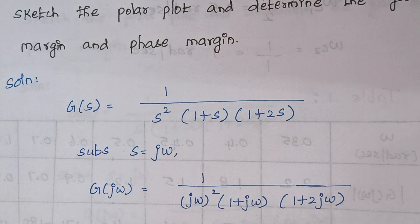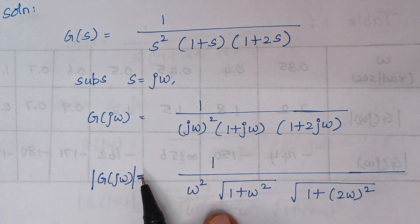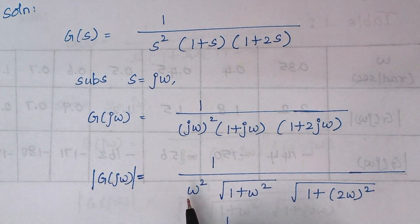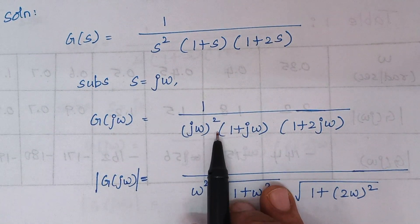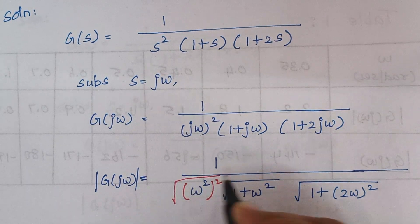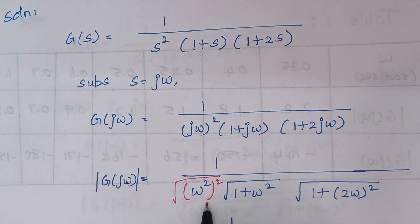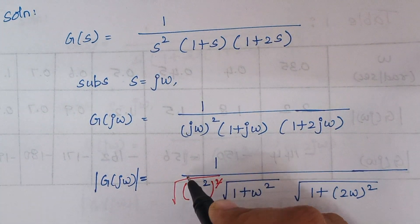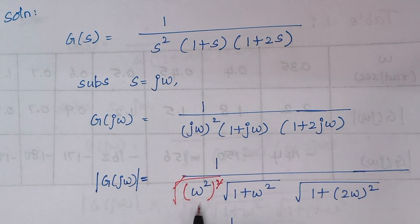Next we are going to find an expression for magnitude and another expression for phase angle. We will start with magnitude. The magnitude expression is the square root of this expression. Here I am having ω squared. I have to square the elements inside and take the square root — the square and square root cancel each other, so finally I will be having ω squared.